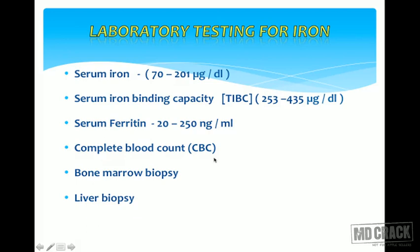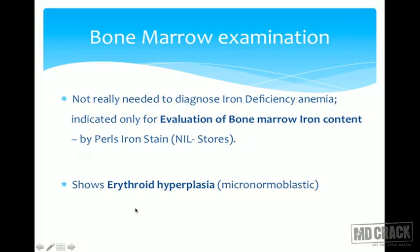TIBC levels will be raised — normal is 253 to 435 micrograms per deciliter. Serum iron and serum ferritin will be very much reduced — serum iron as low as 30 micrograms per deciliter. Overall, CBC parameters — MCV, MCH, MCHC, RDW, hemoglobin, and PCV — are all important for a pathologist to diagnose from peripheral smears. Bone marrow examination is also valuable for differentiating microcytic hypochromic anemia from thalassemia.